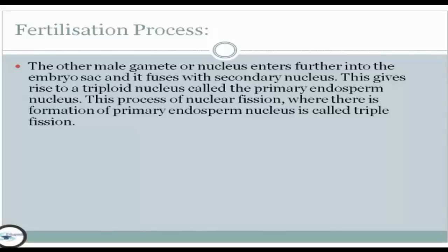This gives rise to a triploid nucleus called the primary endosperm nucleus. This process of nuclear fusion, where there is formation of the primary endosperm nucleus, is called triple fusion.